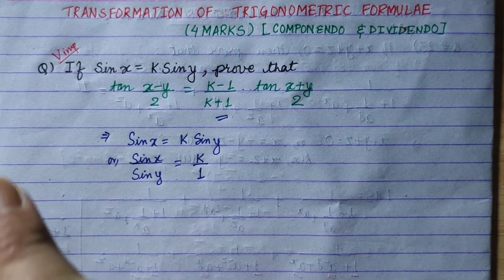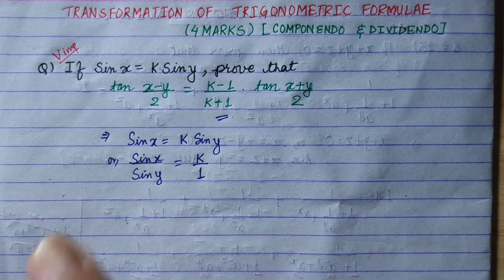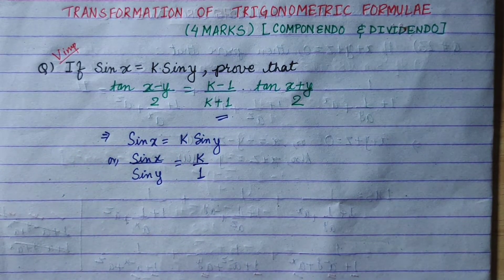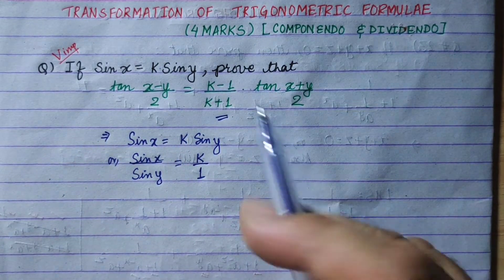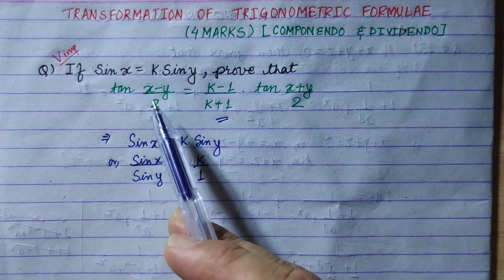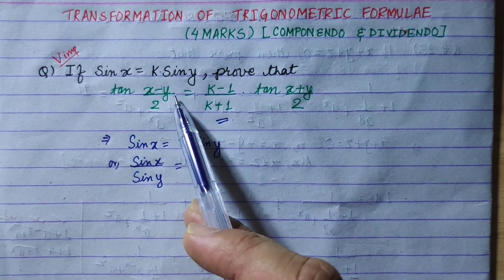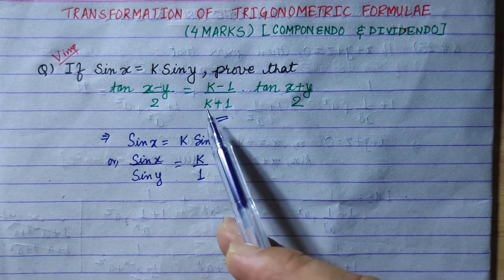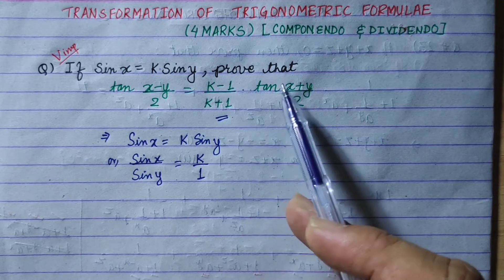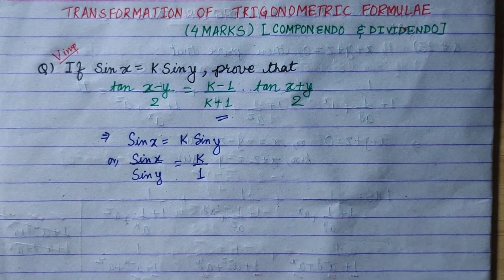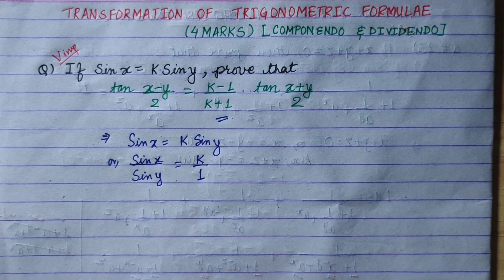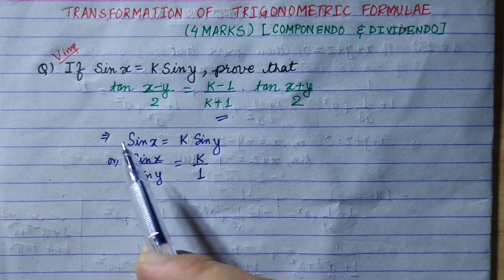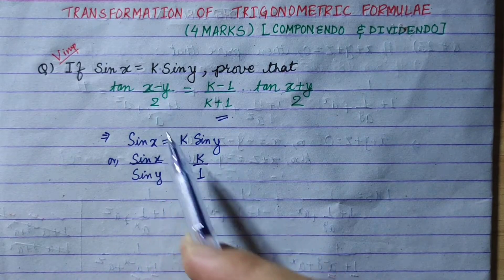In the question, sin x is called k sin y. Let's prove that tan of (x minus y) upon 2 is equal to (k minus 1) by (k plus 1) into tan of (x plus y) by 2. So, sin x equals k sin y.